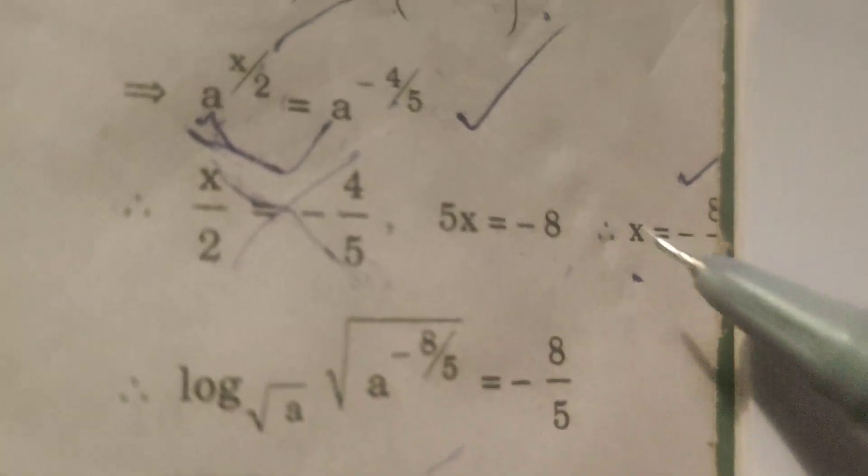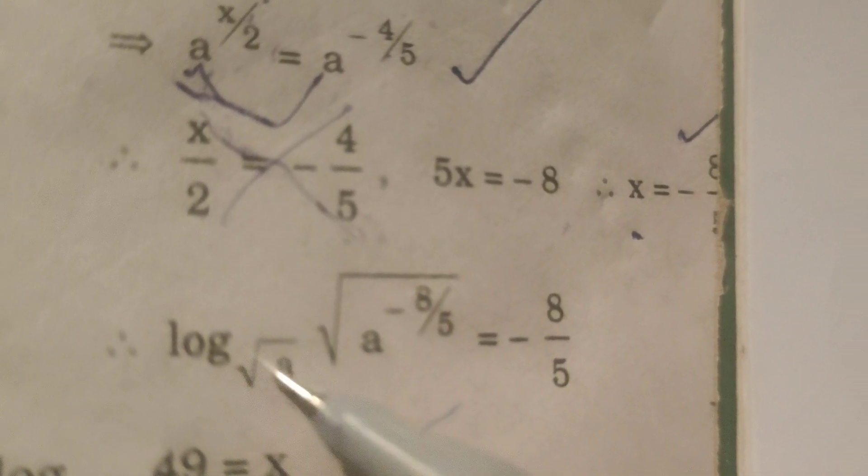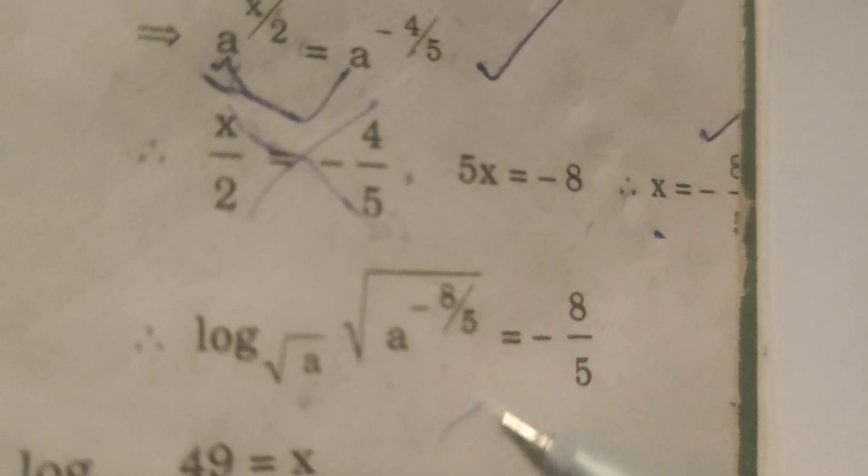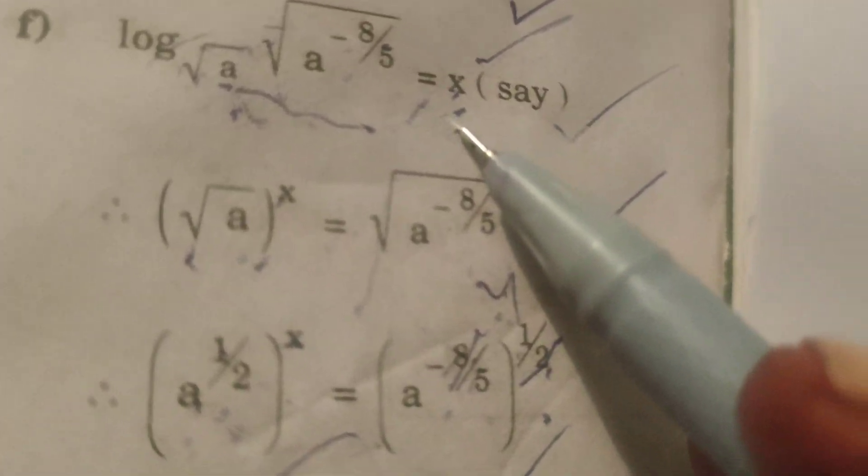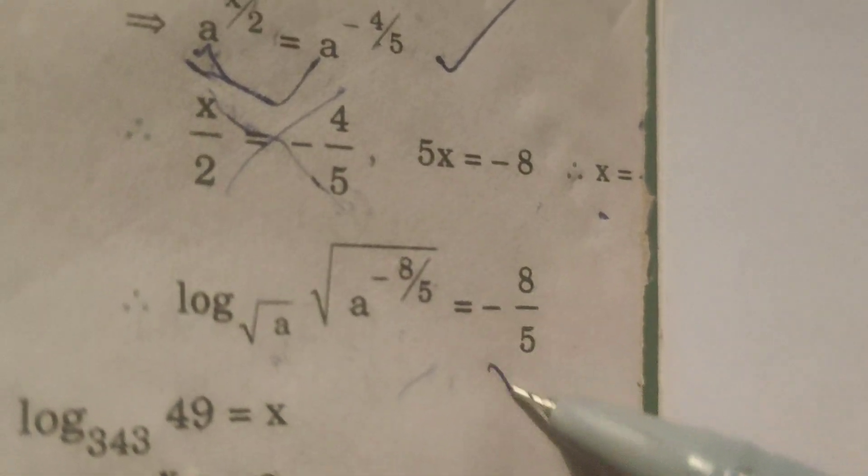So here x value minus 8 by 5. Log of base root a, root a power minus 8 by 5, equals to the value of x, which means minus 8 by 5.